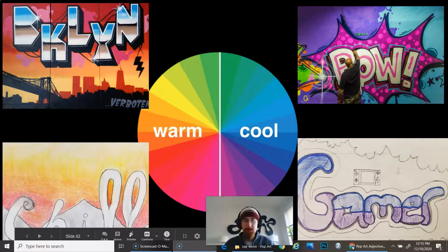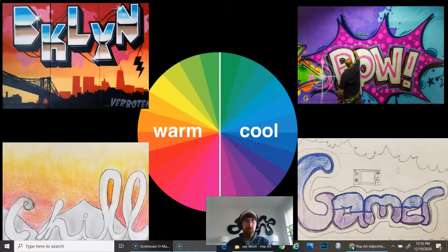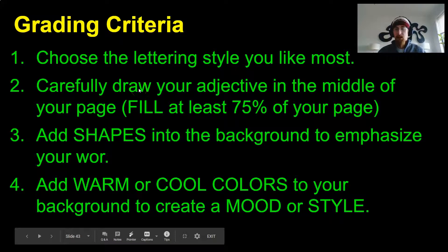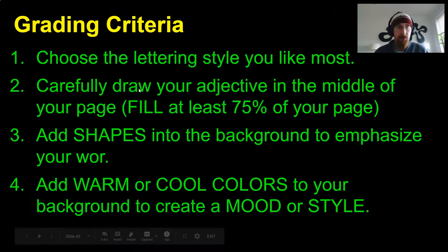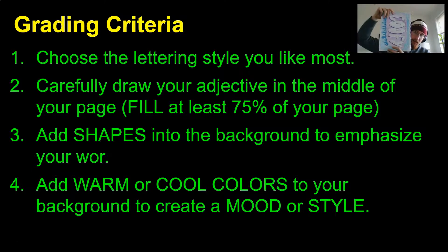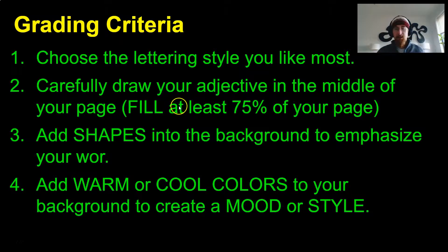As you look at the examples, keep in mind that you'll need to add shapes and color to the background around your letters. The steps for this week: first, choose the lettering style you like the most and carefully draw it in the middle of your page. If you have a bigger letter, turn your page sideways to give yourself more room, since you want at least 75% of your page to be the lettering, not the background.